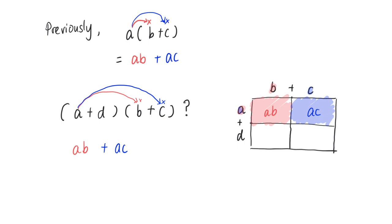I will also have b and d, so it's d times b: db or bd, doesn't really matter. So I can write db, I can also write bd. And the last one would be this purple area, which is d times c, because the length here is d, the length here is c. So dc or cd doesn't really matter.